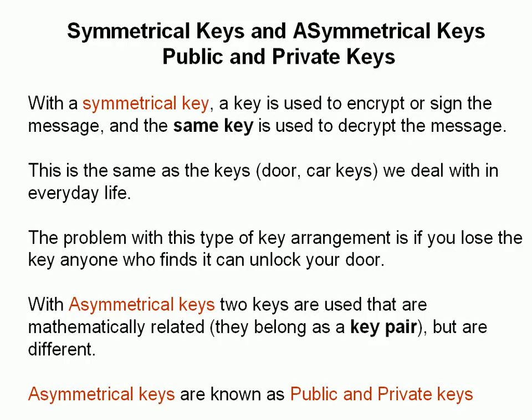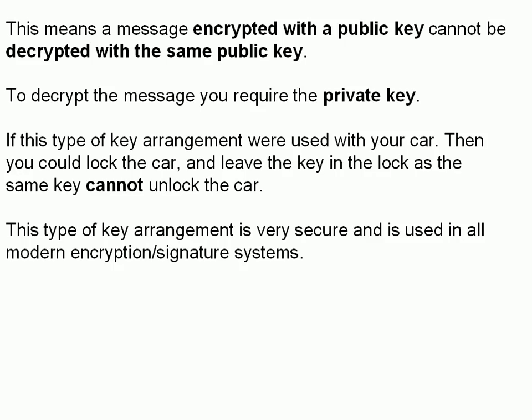With an asymmetrical key, two keys are used. These keys are mathematically related but not the same, and they belong to what's known as a key pair. A message encrypted with a public key cannot be decrypted with the same public key — to decrypt it you require the private key. If you used this arrangement with your car, you could lock your car and leave the key in the car because that key could not be used to unlock it. This type of key arrangement is very secure and is used in all modern encryption and signature systems, in conjunction with symmetrical keys.